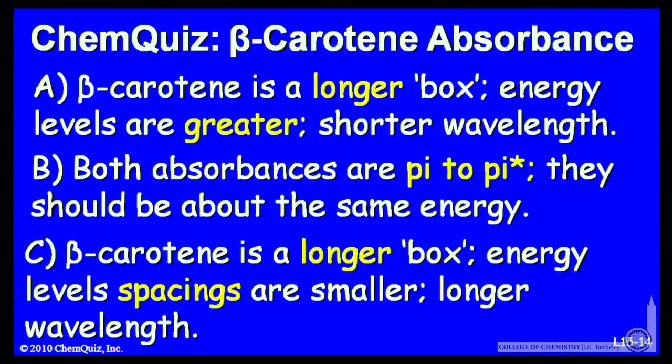Let's look at a possible explanation for each answer. A: beta-carotene is a longer box, energy levels are greater, so you should have a shorter wavelength. Or B: both absorbances are pi to pi star, they should be about the same. Or C: beta-carotene is a longer box, the energy level spacings are smaller, so you'll have a longer wavelength. Think about that and make a selection.